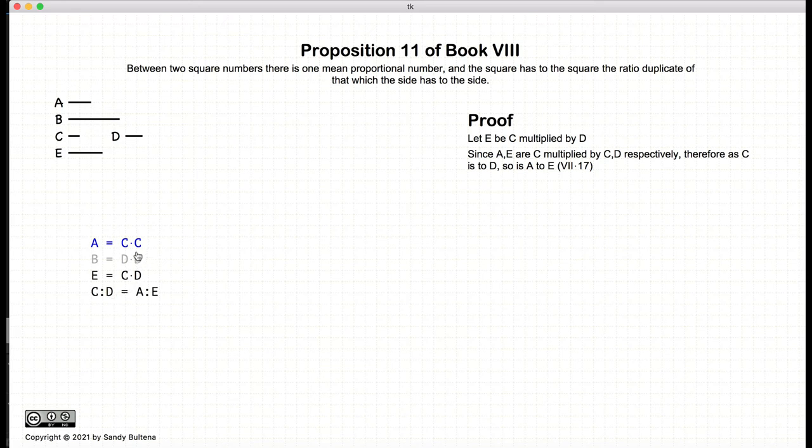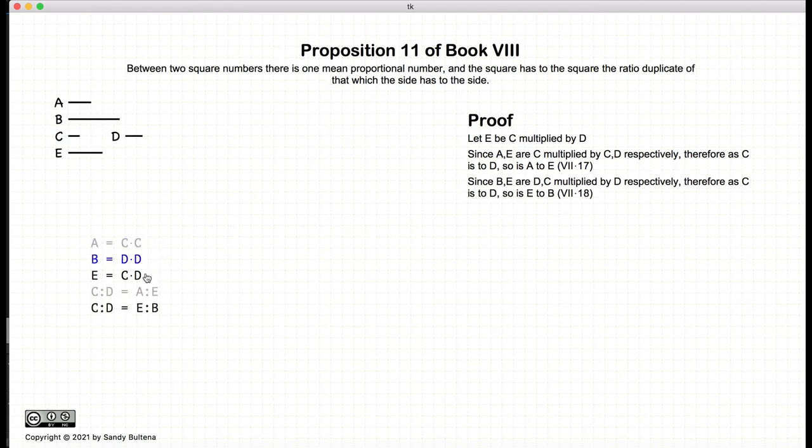Now, c is to d is a is to e because we can essentially ignore this multiplicative factor. That's according to Proposition 17 of Book 7. Again, a is to e as c is to d. And likewise, we have that c is to d as e is to b. So c is to d as e is to b.